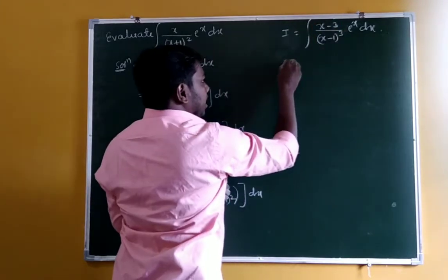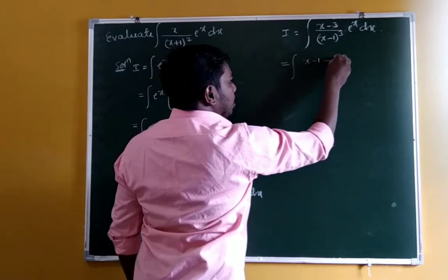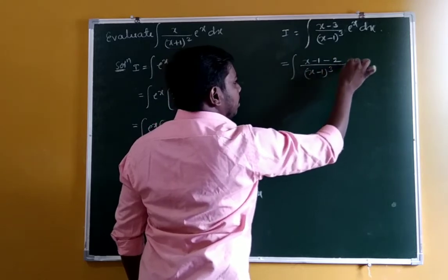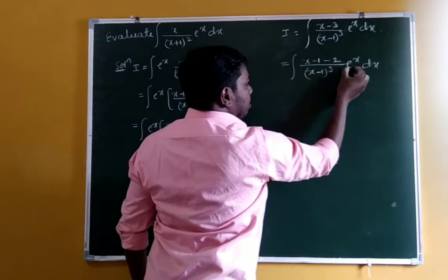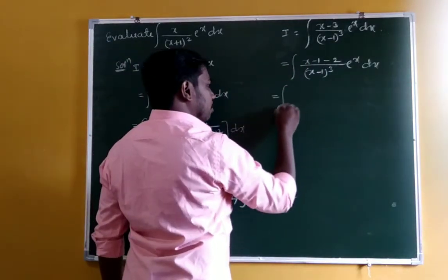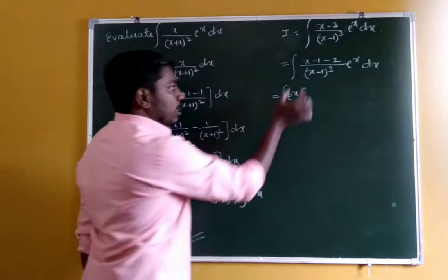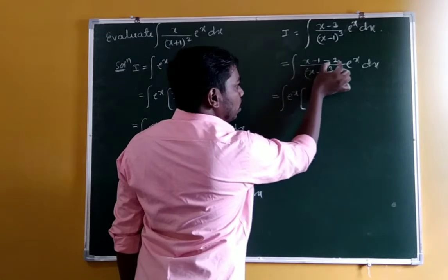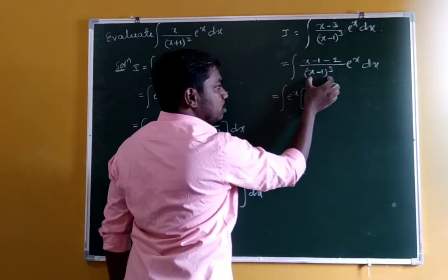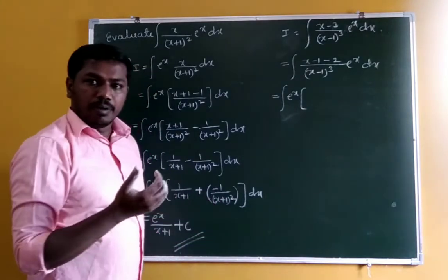Rewrite the numerator: x minus 3 equals (x−1) minus 2. So the integrand becomes eˣ into [(x−1) divided by (x−1)³ minus 2 divided by (x−1)³] into dx.